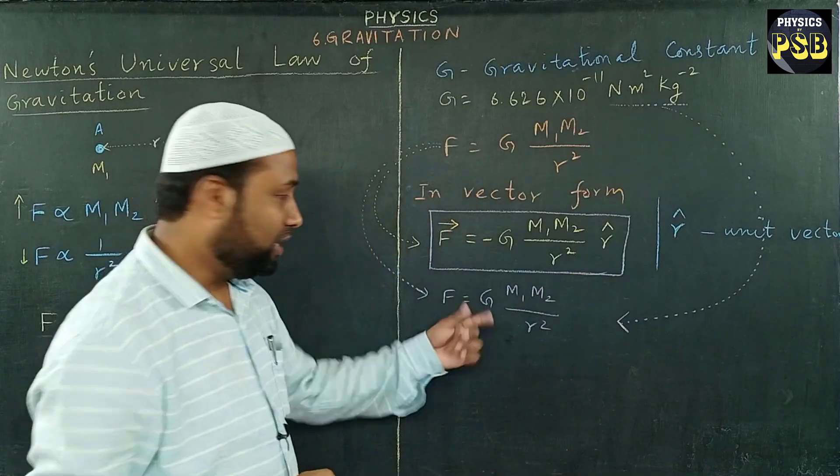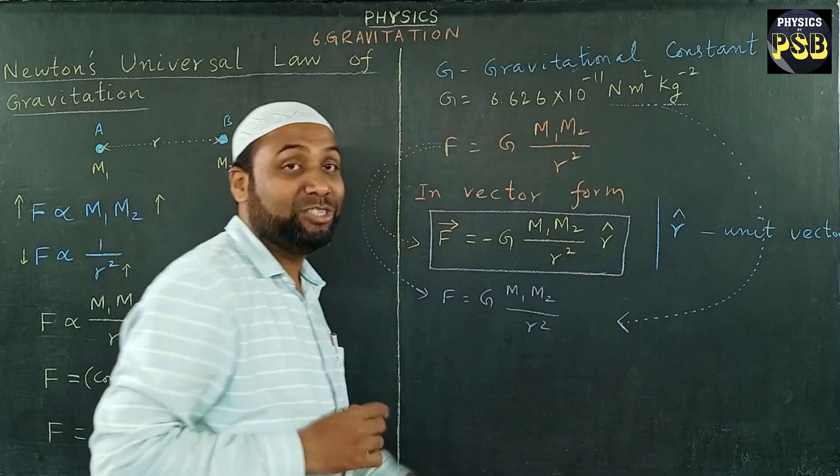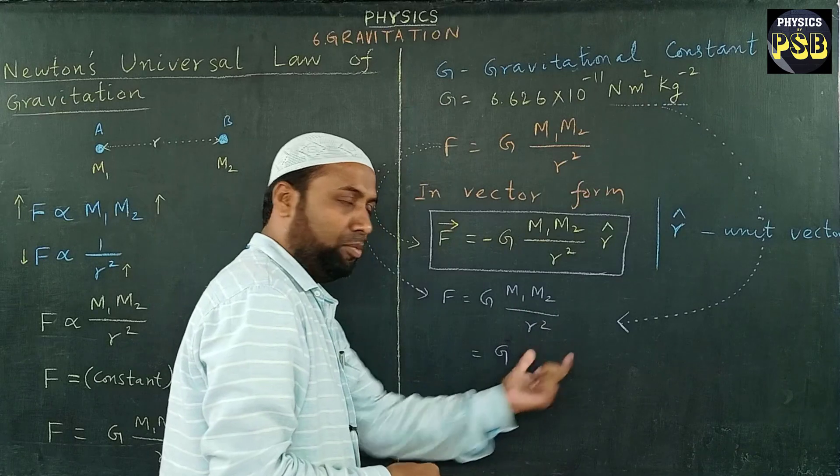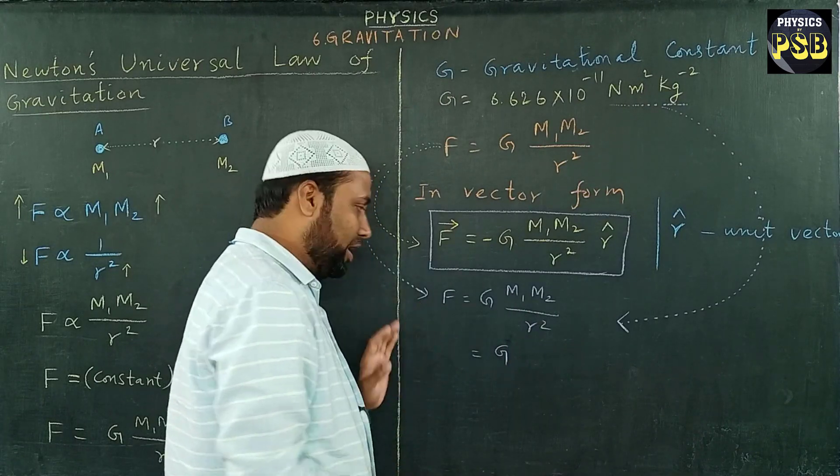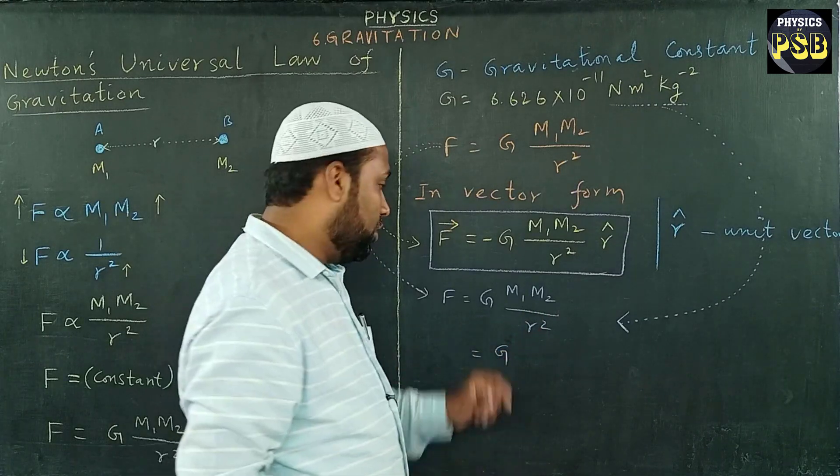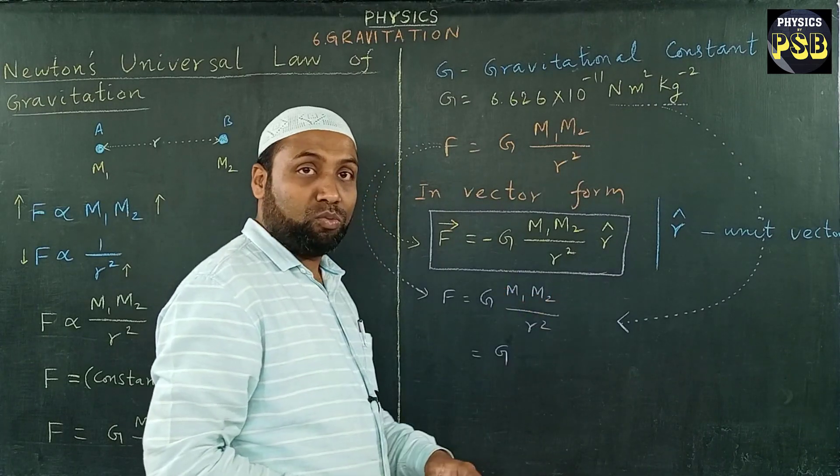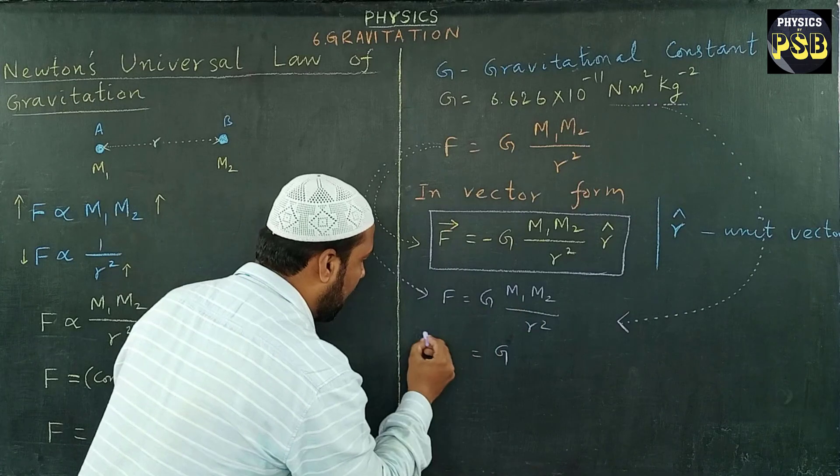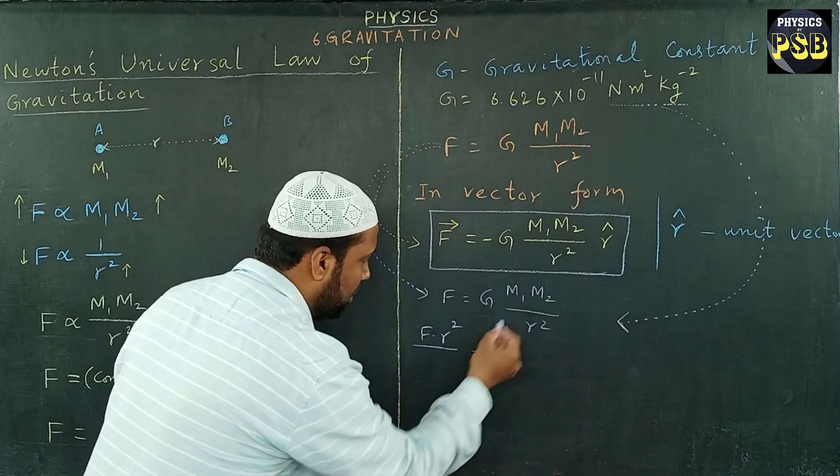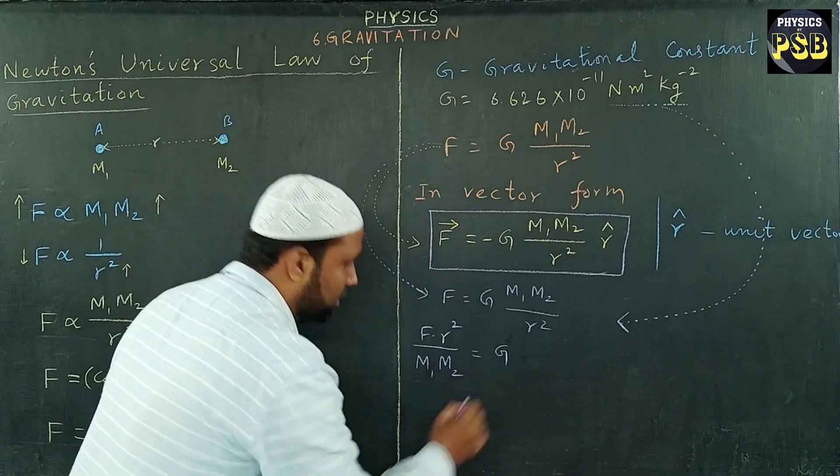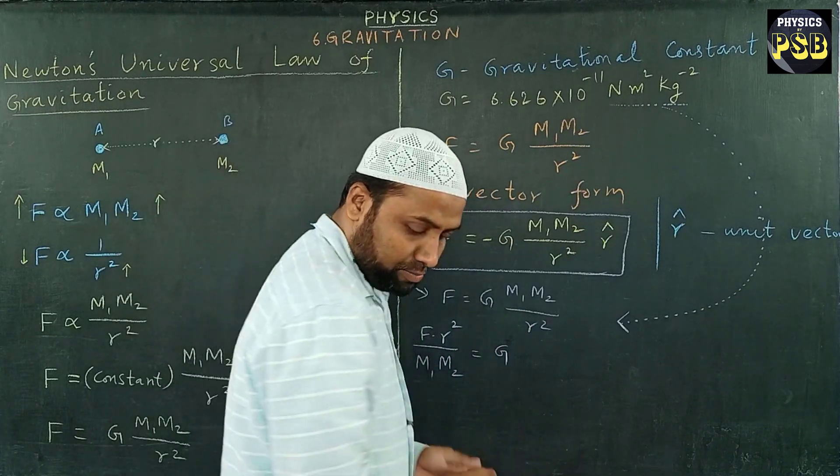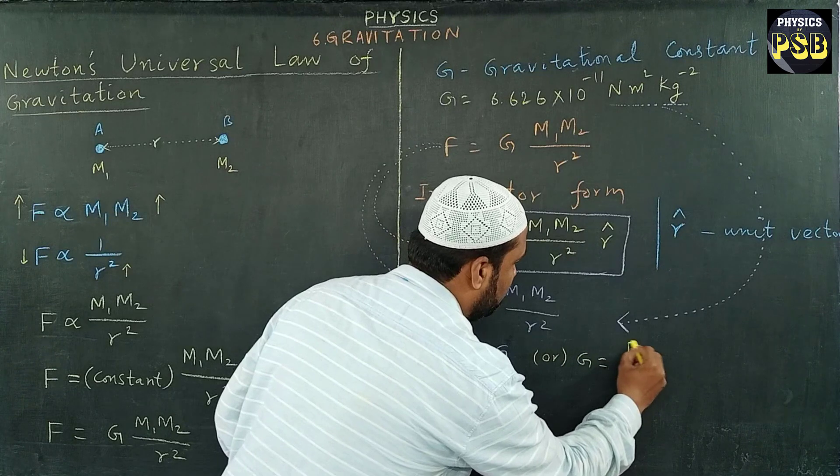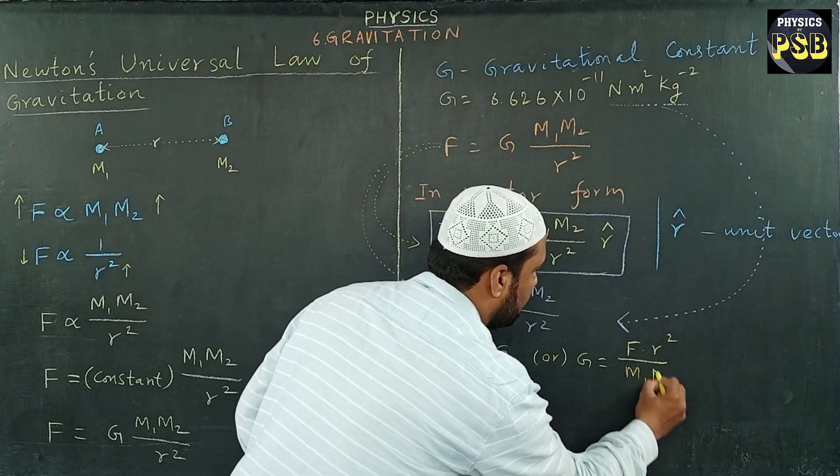From this expression, I will get an expression that represents G. For that, I will keep everything as such. This term will be taken to left hand side. The part which is dividing will multiply and the part of the equation which multiplies will divide when taken to the other side. R square will multiply with F and m1 m2 will go to denominator. This is the expression we obtained for G. This can also be written this way: G equals to F R square upon m1 m2.